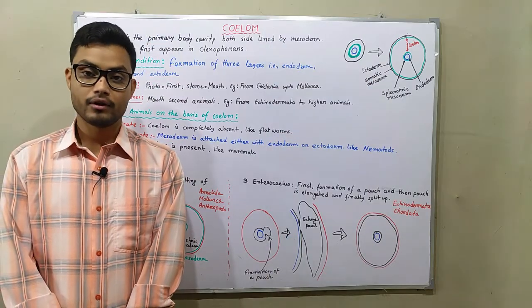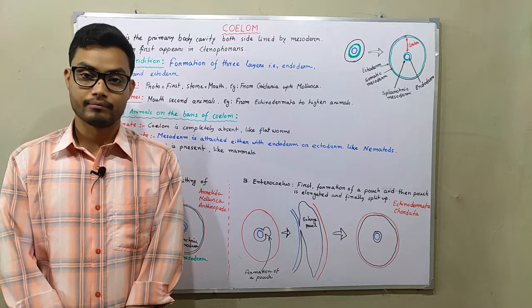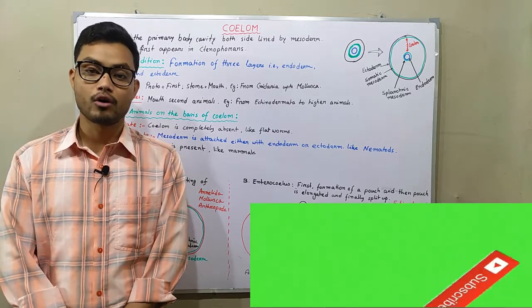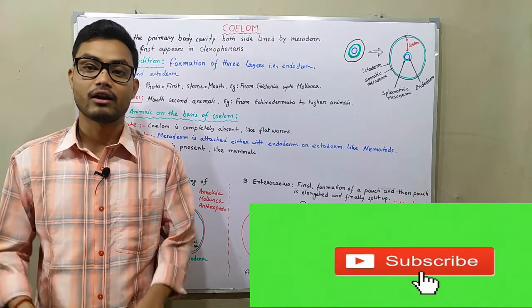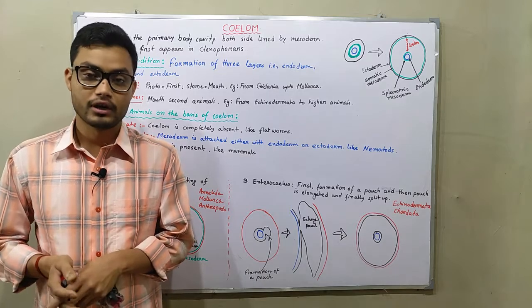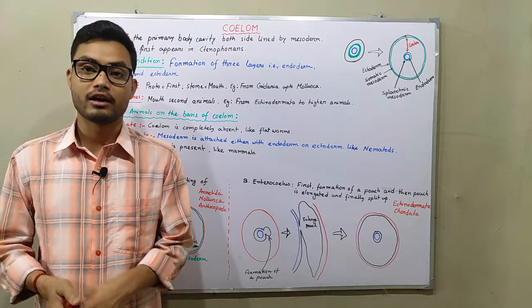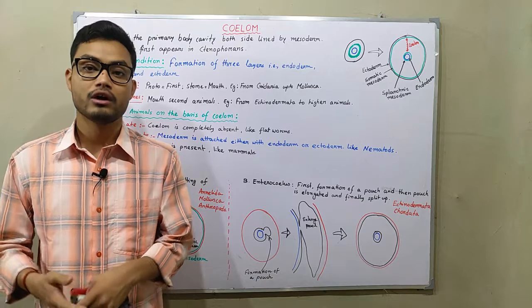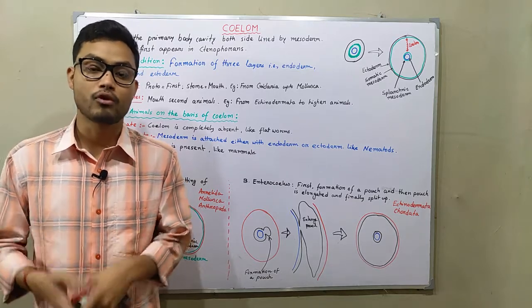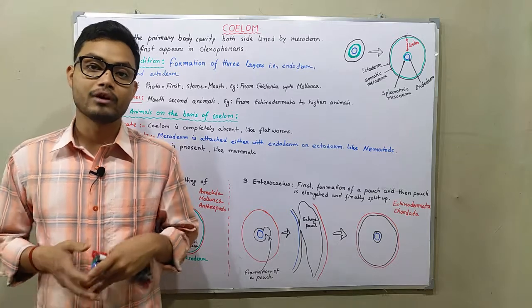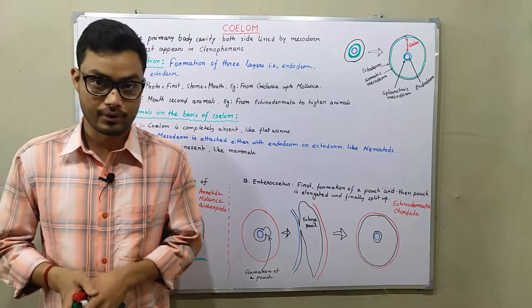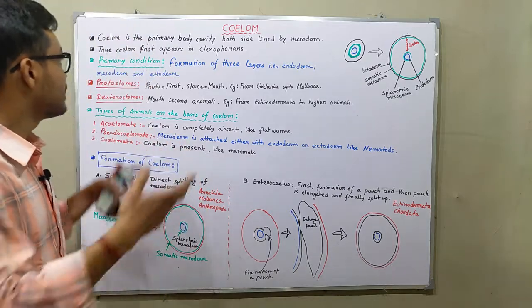Coelom is the primary body cavity, both sides lined by mesoderm. It is the main cavity where important organs in our body, like heart, lungs, and kidneys, are developed and reside. Hello friends, welcome to Biology Concern. I am Animesh, and in this video I am going to discuss about coelom — what is coelom, what are the types of coelom, and how coelom forms.